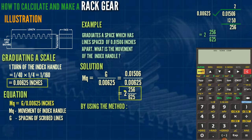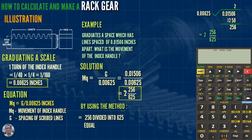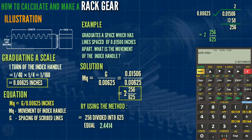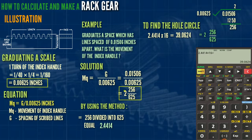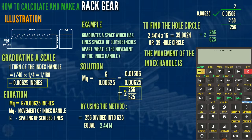Using the method: two hundred fifty-six divided into six hundred twenty-five. Using the calculator, six hundred twenty-five divided by two hundred fifty-six equals two point four four one four. To find the whole circle: two point four four one four times sixteen equals thirty-nine point zero six two four, or a thirty-nine hole circle. So the movement of the index handle is two full turns, sixteen holes, on a thirty-nine hole circle.